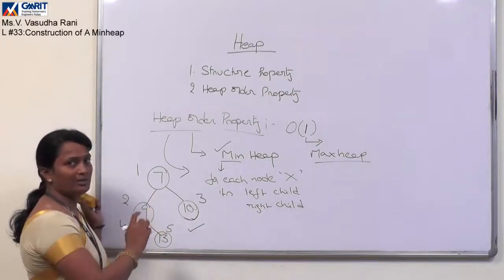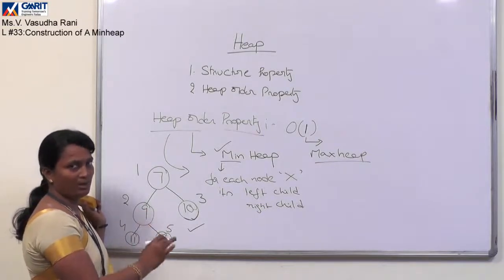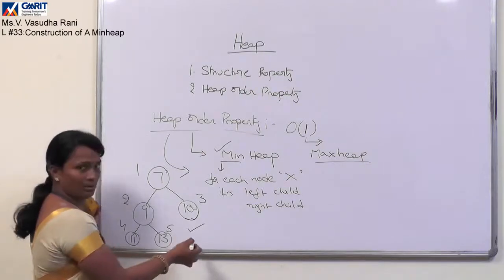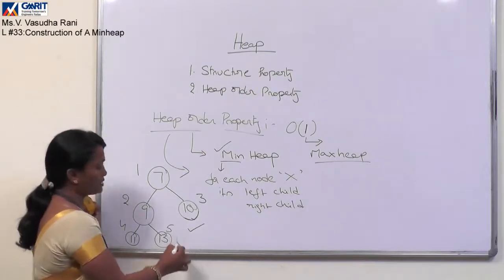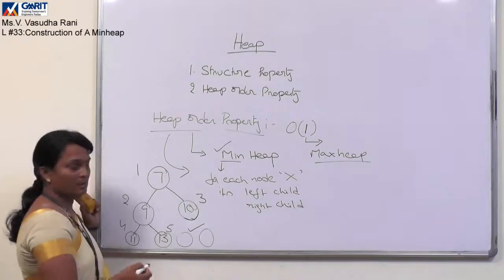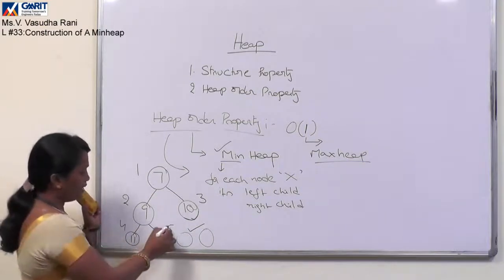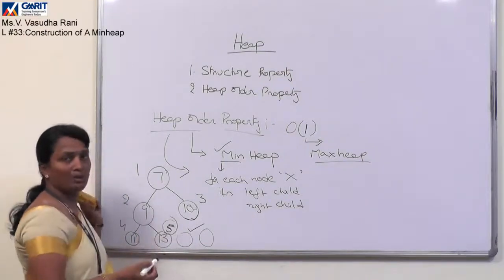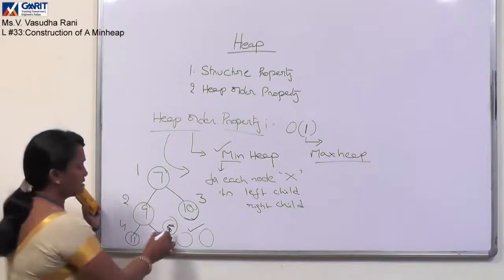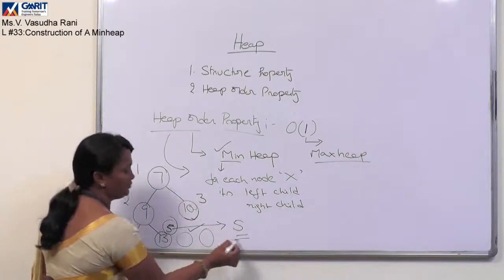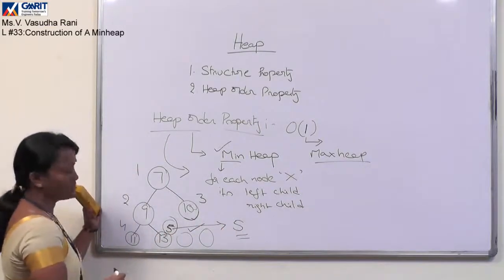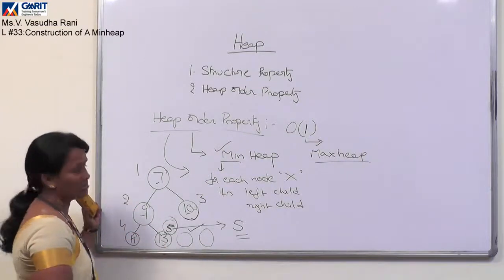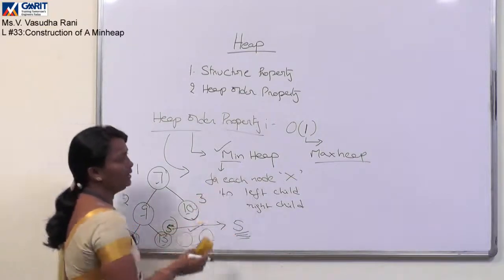It should satisfy the complete binary tree property, which indicates the bottom level may have some empty locations. Here there are 2 empty locations, and even then this is a valid min heap. Based on this numbering, whatever the maximum number given to a particular node indicates the number of nodes in the heap. So if the maximum number is 5, there are 5 nodes: 1, 2, 3, 4, 5. This is all about min heap.